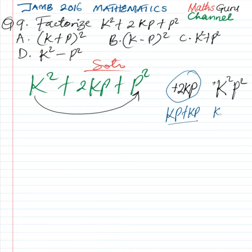And if we multiply the terms kp times kp, that is kp multiplied by kp, we are going to have k square p square. So the terms we are going to add should be the same terms we are going to multiply to have these as the product and these as the sum.